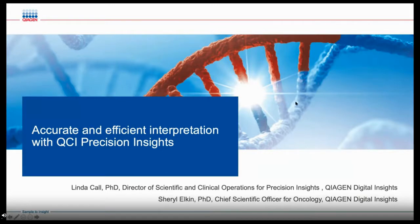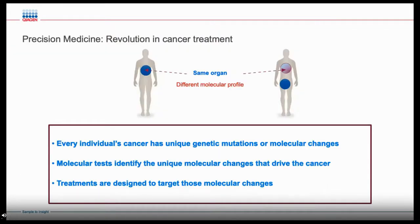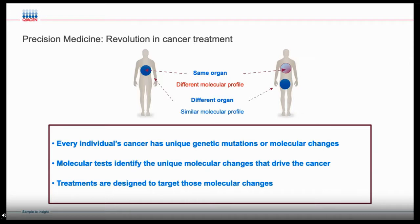Thank you very much for the kind introduction. The era of precision medicine has led to a revolution in cancer treatment. Historically, cancer was treated based on the organ of origin, and treatment protocols often varied widely depending on the institution. However, cancers that originate in the same organ can be driven by different genetic alterations. The advent of molecular diagnostics and targeted therapy changed the landscape of cancer treatment, suggesting that cancers in the same organ could be treated effectively with different therapies based on their particular molecular profile.